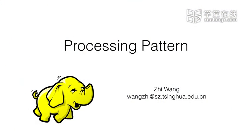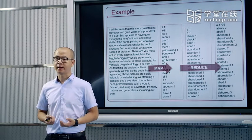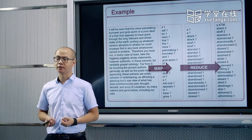大家好，上一节我们讲到了什么是MapReduce，以及为什么我们要用MapReduce来进行大规模的数据处理。那么在这一节我们将详细的介绍在MapReduce里面数据是怎么样被处理的，也就是它的数据处理模式。我们通过一个简单的例子来代入我们今天要讲的这个数据处理模式。